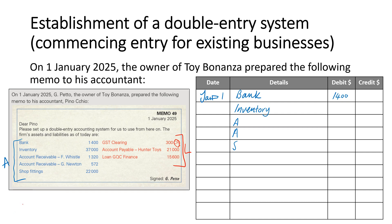We'd then start recording our liabilities. GST clearing has a $300 credit balance, so I'm going to put that on the credit side. I would do the same for accounts payable and for the loan from GQC Finance — they would both have credit balances.